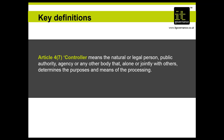The second critical definition is that of controller — the entity that determines the purposes and means of processing. A controller can be either a natural or a legal person. If an individual collects data for a wide number of other people, that individual may also be a data controller. There is a derogation in GDPR which says that data an individual gathers for their own purely personal use is outside the scope of GDPR — so you don't have to treat GDPR as applying to information you collect about friends and family.